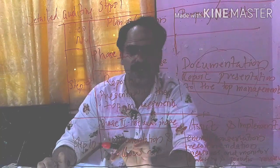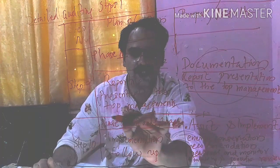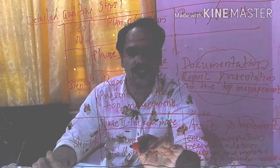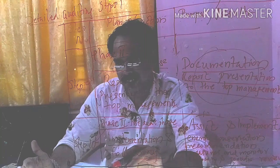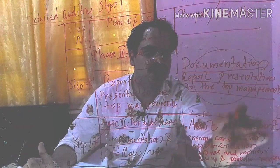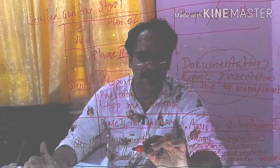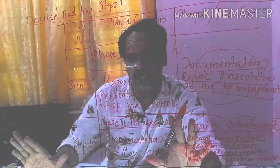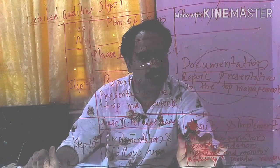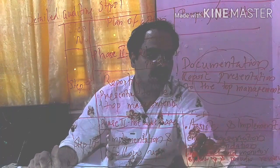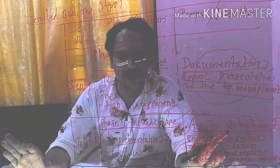Up to step nine is included under phase two — the audit phase. The last step, step ten, is under phase three — the post-audit phase. This includes implementation and follow-up. After conducting the energy audit, they will get some ideas and recommendations for energy conservation measures. The energy auditor will assist the energy managers to implement those ideas, followed by follow-up and periodic review. These are all the main steps of energy auditing.